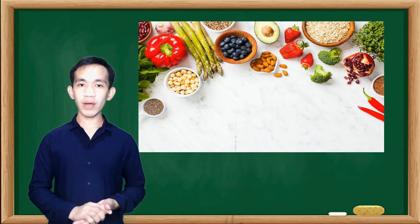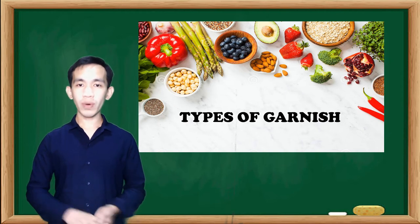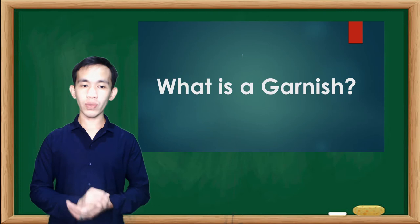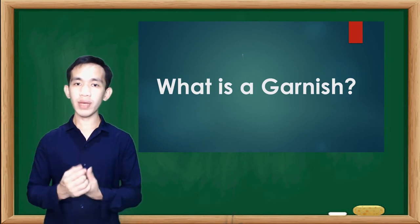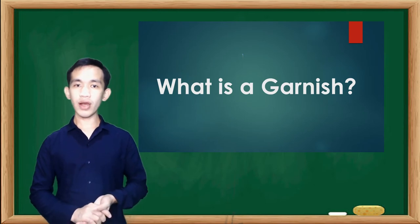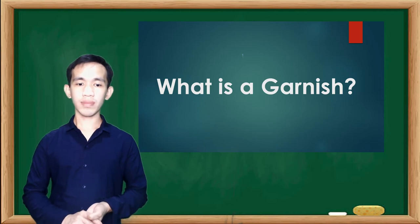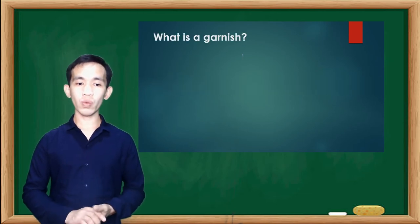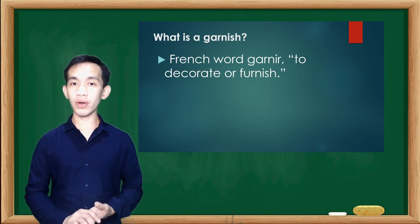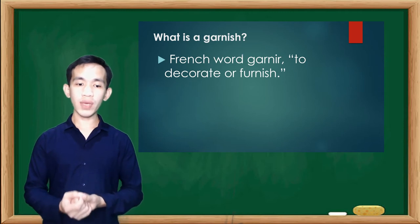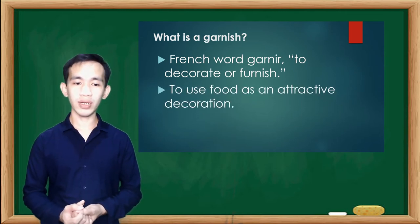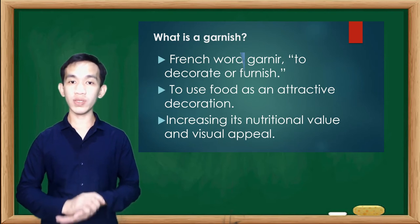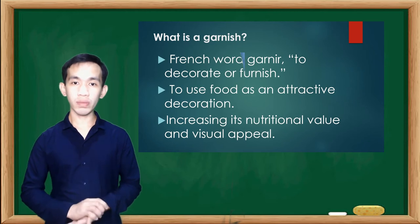Our topic for today is all about the different types of garnishes. But before that, we will define first what garnish is. Any idea about the word garnish? Okay, Ms. Pame — very good. Garnish is something that decorates or furnishes a food. The word garnish comes from the French word "garnier," which means to decorate or furnish. In the culinary world, it means to use food as an attractive decoration — something that should add real value to the dish by increasing the nutritional value and visual appeal.